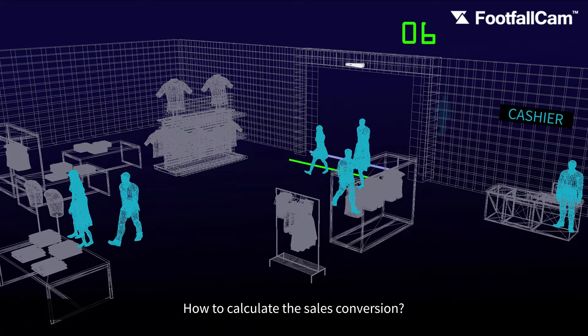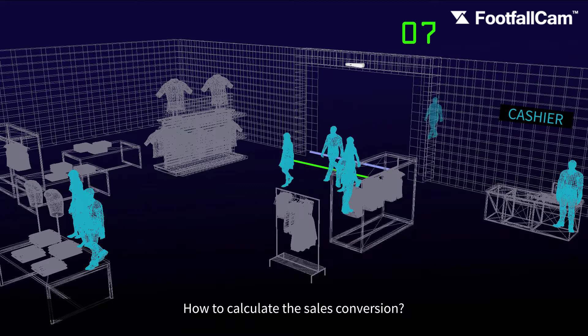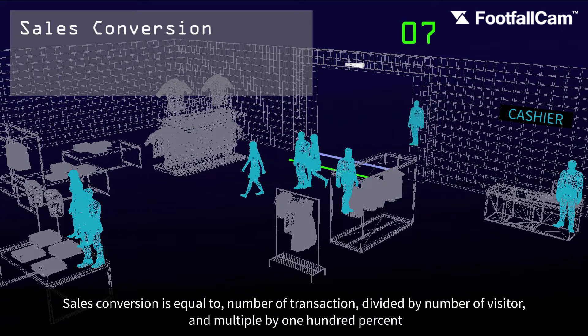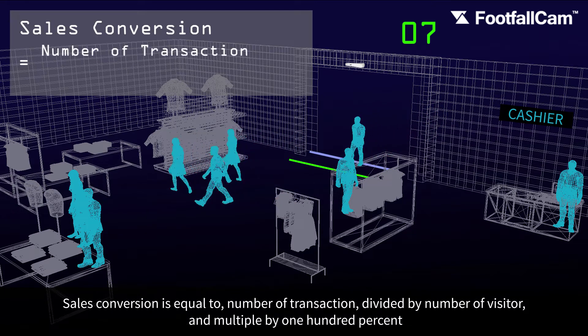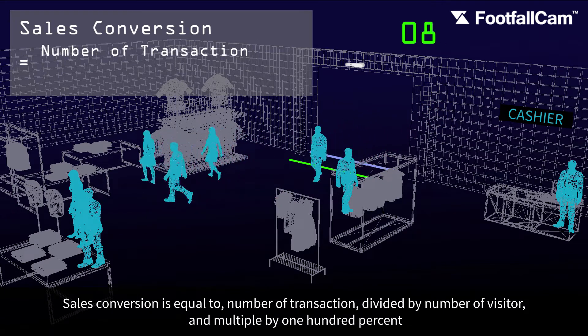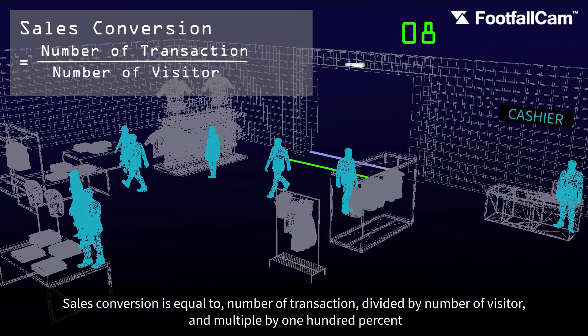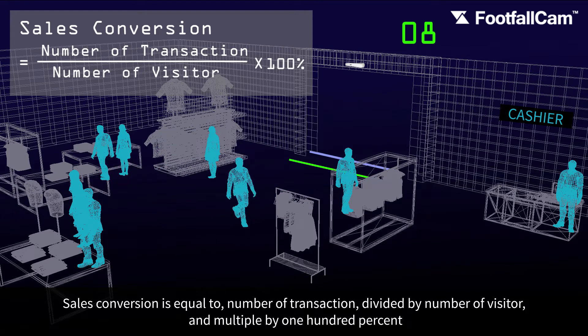How to calculate the sales conversion? Sales conversion is equal to the number of transactions divided by the number of visitors, and multiplied by 100%.